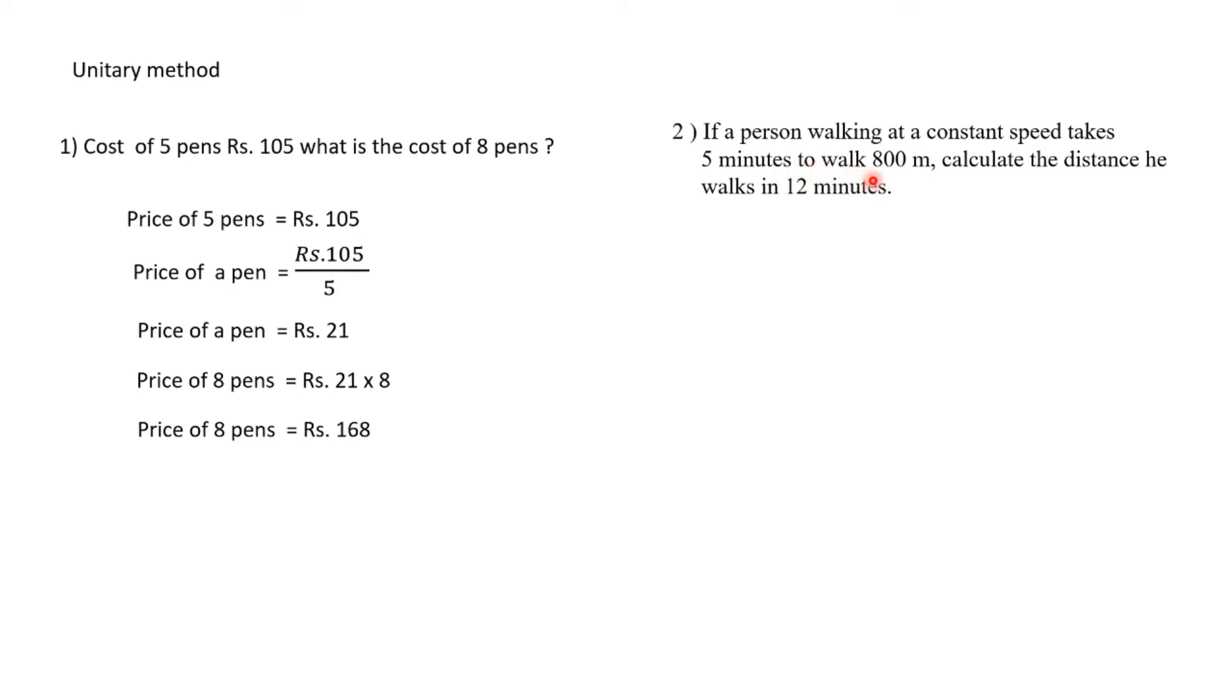Distance walked in 5 minutes is 800 meters. So you can find 1 minute. You divide the right side value by the left side value. 800 divided by 5 comes to 160. Now you know 1 minute, how much per unit. Then if you want to find 12 minutes, you can multiply by 12. So 160 times 12 equals 1920 meters.